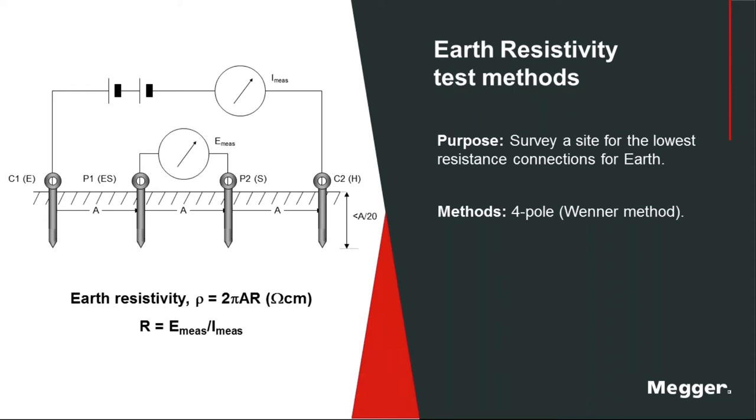Resistivity is a volumetric measurement. Your soil is three-dimensional. So you need to correct for that. That's where you see that little formula down there: two pi ar. Two times pi, then a would be your spacing, and r would be your resistance off of your meter. That would give you your soil resistivity in Ohm centimeters.